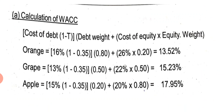Calculation of weighted average cost of capital: WACC equals cost of debt into (1 minus T) into debt weightage, plus cost of equity into equity weightage. In the case of Orange company, cost of debt is 16% and tax rate in all cases is 35%. So: 16% into (1 minus 0.35) into 0.80, and cost of equity is 26% into equity weightage 0.20.